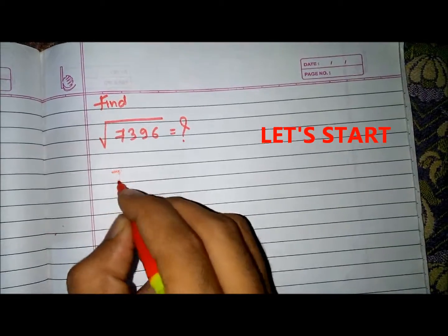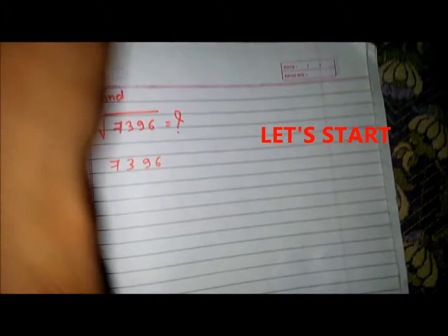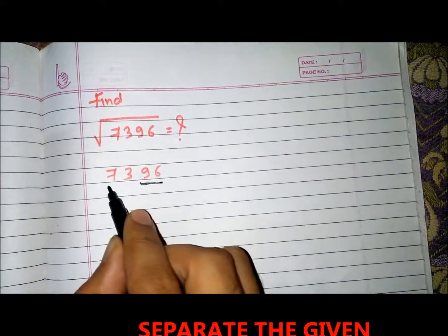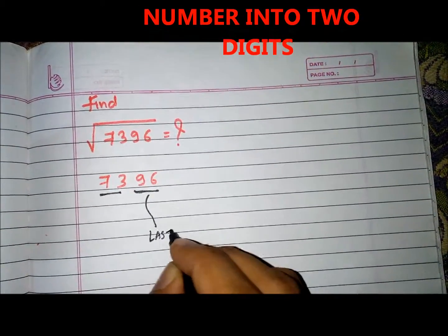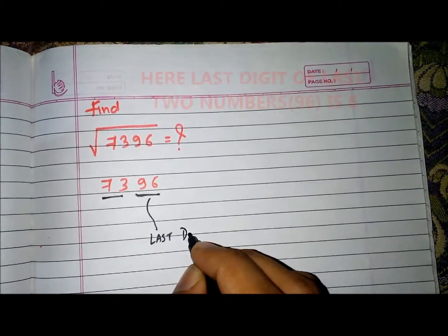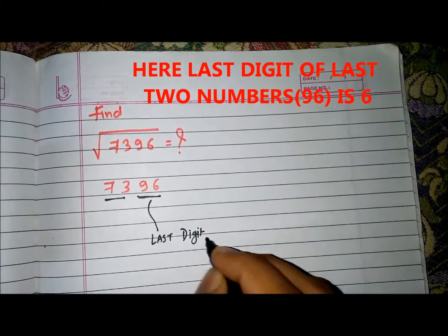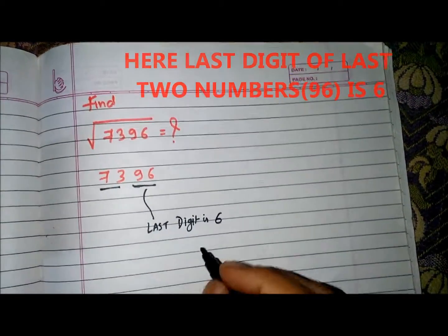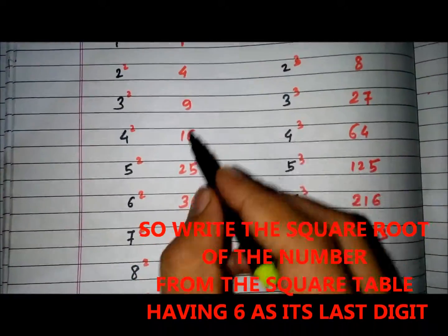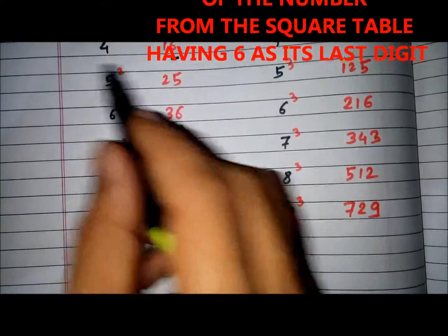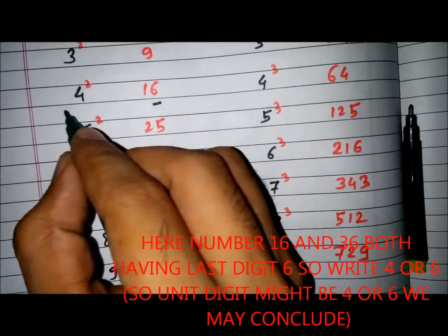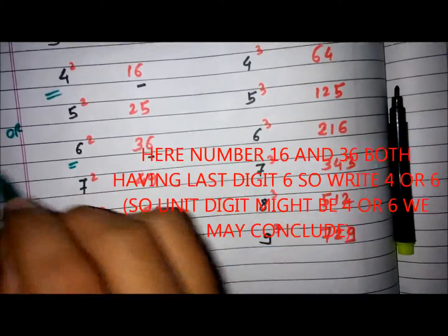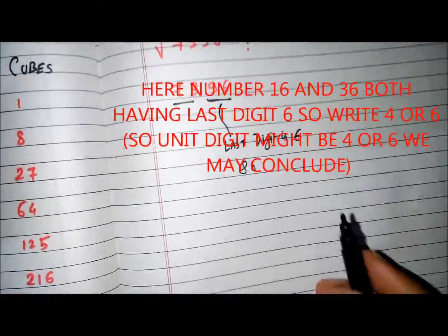Let's try to find the square root of 7,396. Separate the given number into two parts. Here, the last digit of the last two numbers — that is 96 — is 6. So write the square root of the number from the square table having 6 as its last digit. The numbers 16 and 36 both have last digit 6, so write 4 or 6 — the unit digit might be 4 or 6.